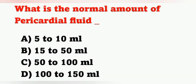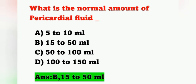Next question: what is the normal amount of pericardial fluid? Options: A) 5-10 ml, B) 15-50 ml, C) 50-100 ml, D) 100-150 ml. The correct answer is 15 to 50 ml in adults. Option B is the correct answer.